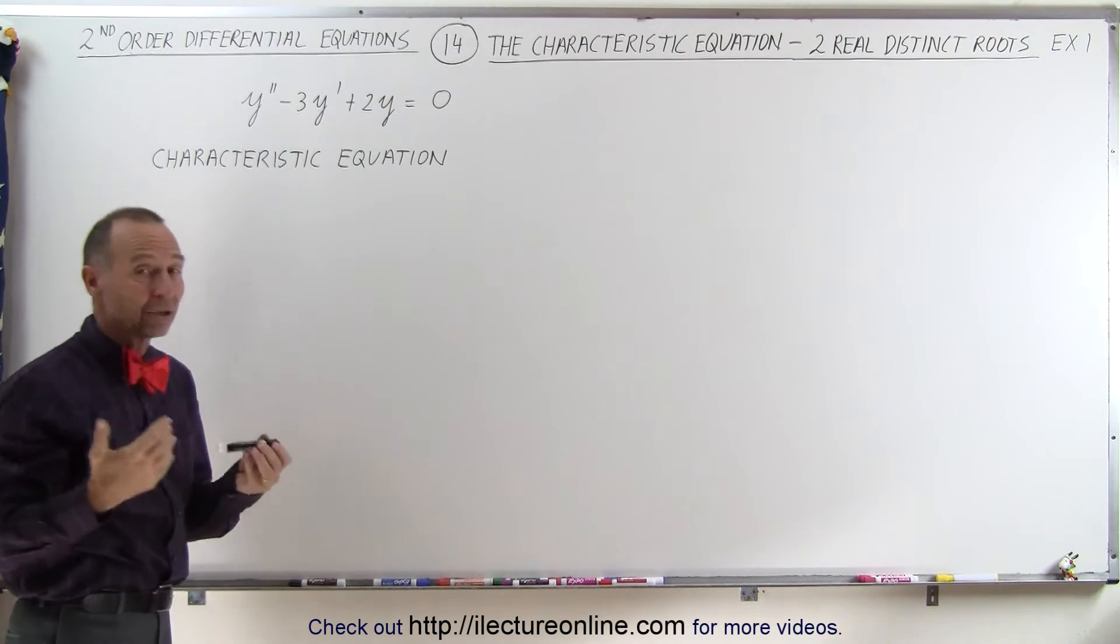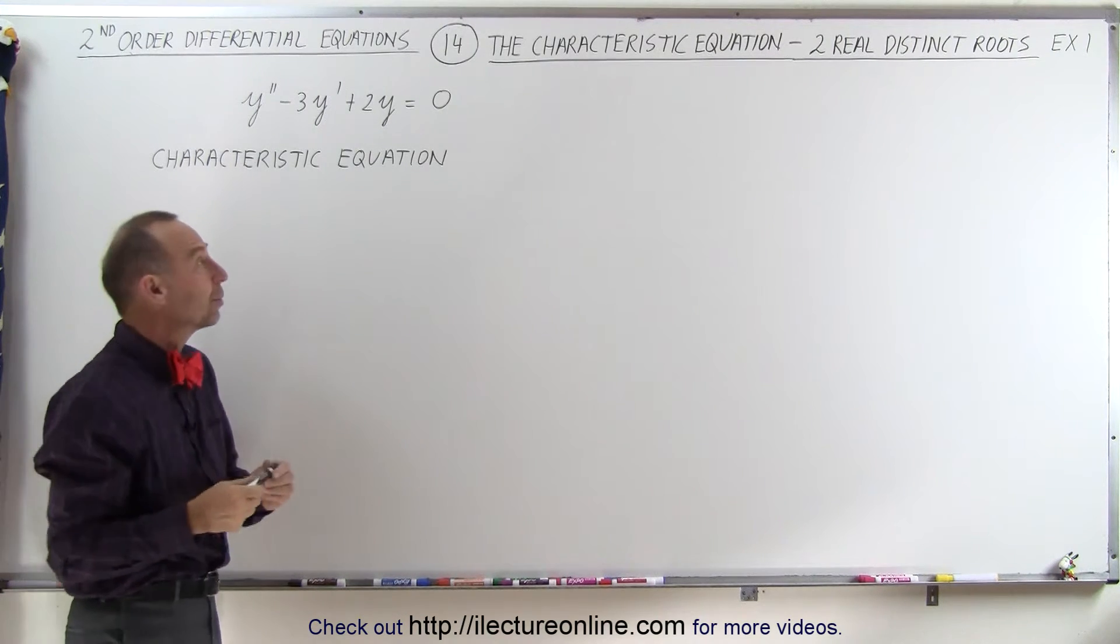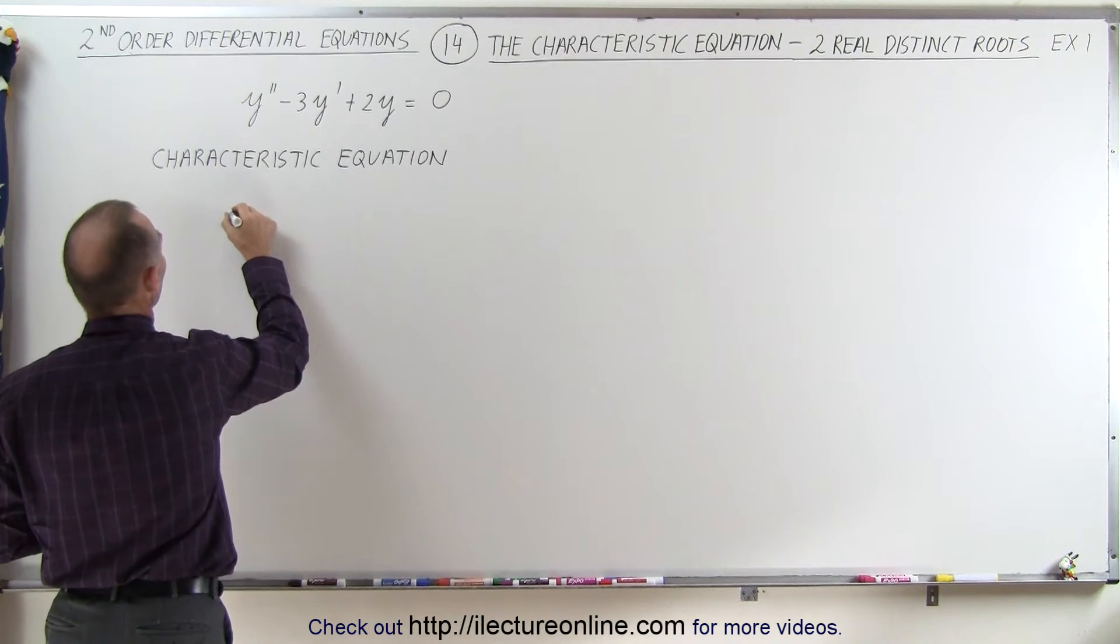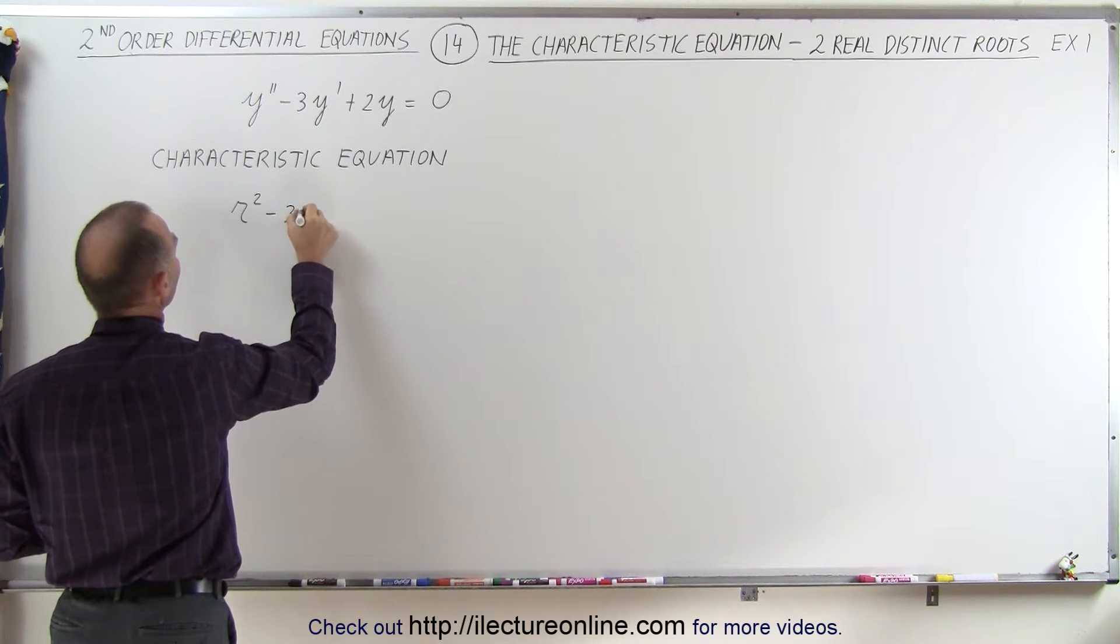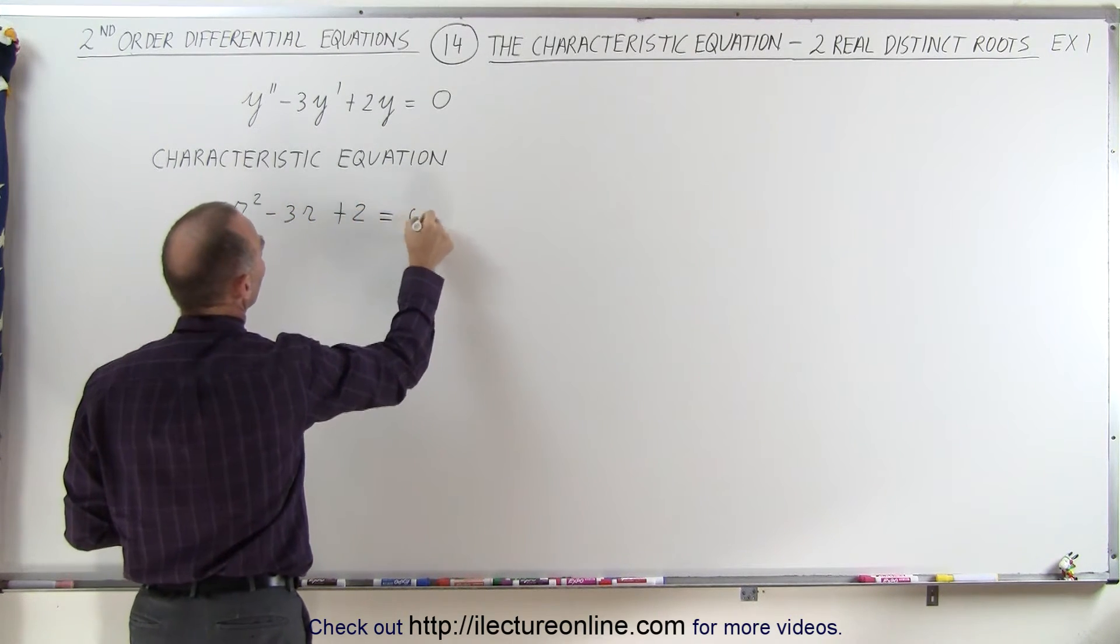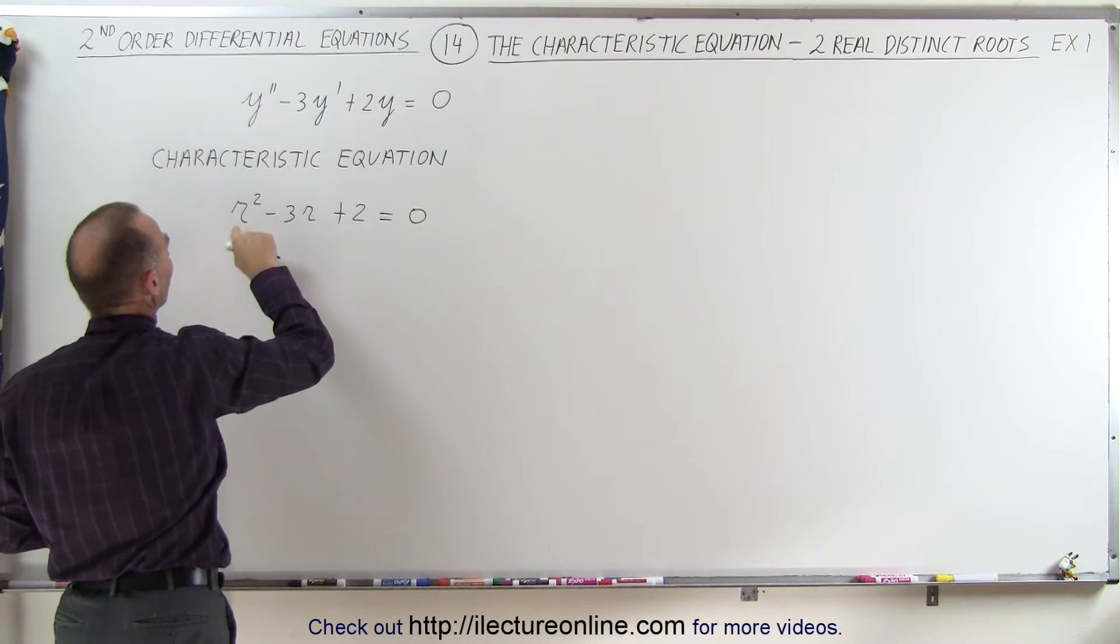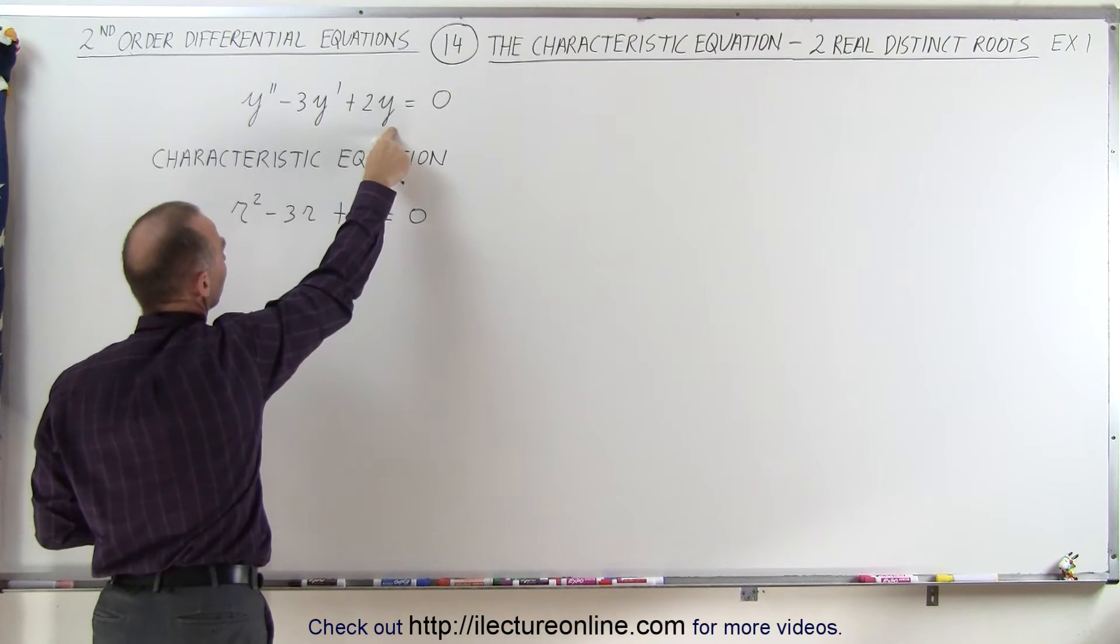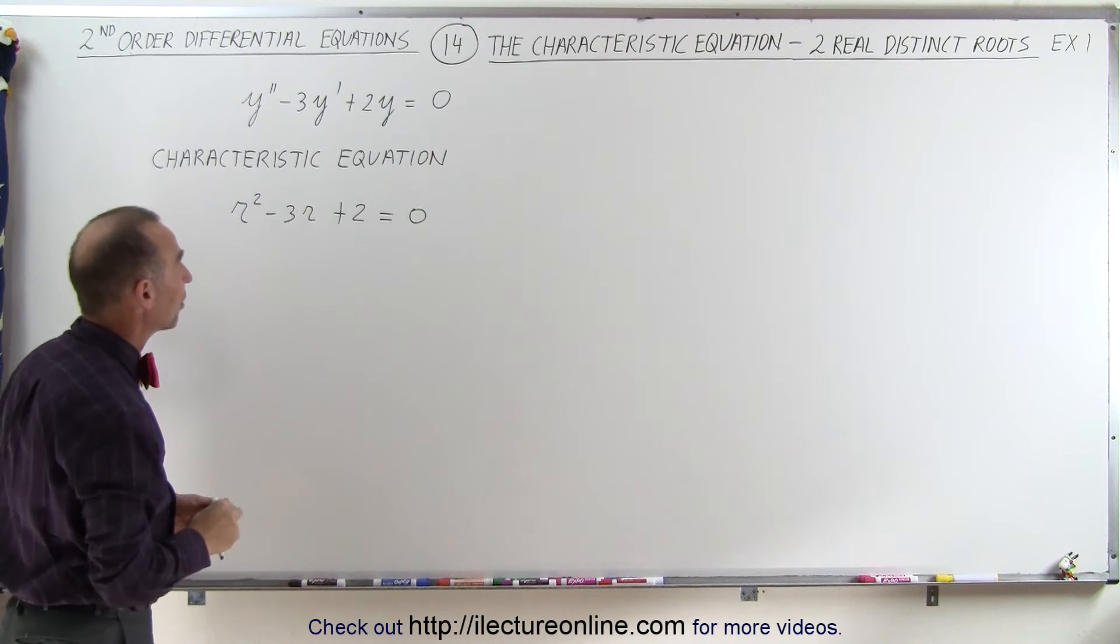Well, that's the characteristic equation, except instead of using x, we tend to use r when we deal with differential equations. So we write this as r² - 3r + 2 = 0. The second differential becomes r², the first differential becomes r, and the function itself is simply r⁰, which is 1, so you don't have an r there at all.